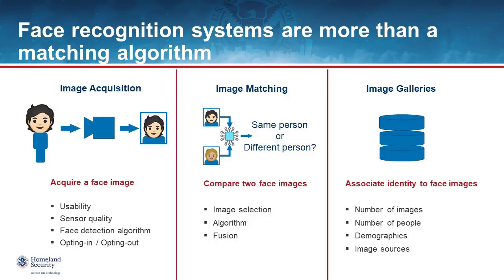When testing how well image acquisition systems work, you need to consider a couple of things. First, usability — how easy is it for that human to interact with the camera system so that a good picture is taken? Are the instructions clear? Second, sensor quality — does the camera take a good picture, or is it blurry, off-center, overexposed? Does it take a good picture for all kinds of people: short, tall, light, dark, male, female? Next, face detection algorithms — can we reliably pick a face out from all the background information in a given picture? And finally, opting in and out — are we collecting face images only from people who meant to interact with the system, not inadvertently collecting images from people in the background?